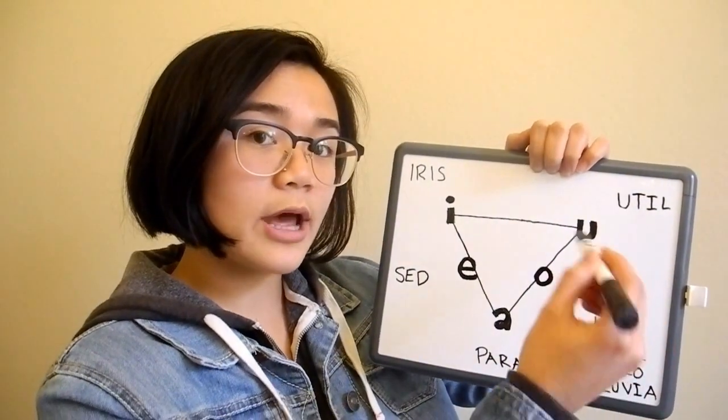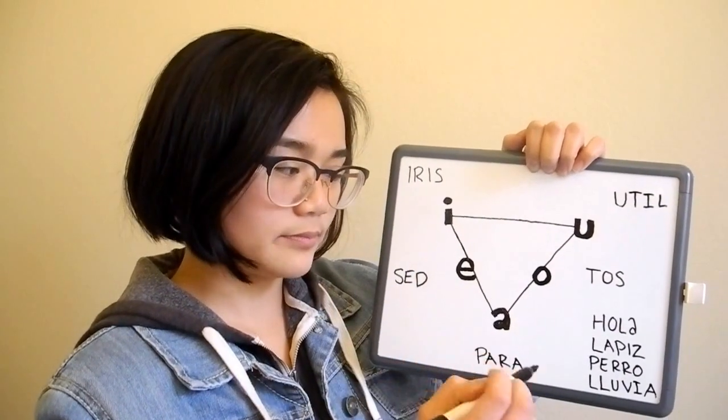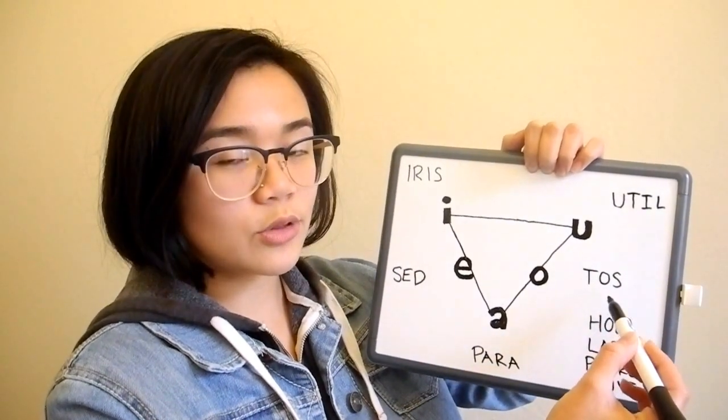When you pronounce O and U, your mouth is in an O shape. Dos. Dos.